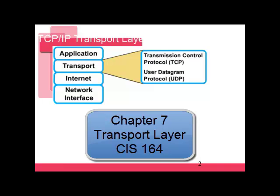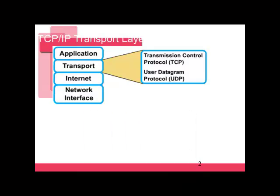Chapter 4 is mainly about TCP and UDP, which both operate at the transport layer. TCP is part of TCP/IP, which is needed to communicate on the Internet.